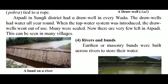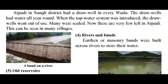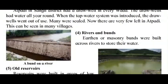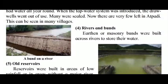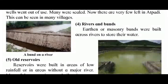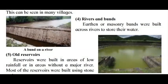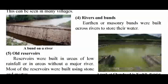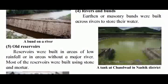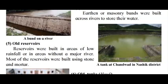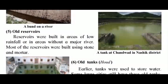Four: Rivers and bunds. Masonry bunds were built across rivers to store their water. Five: Old reservoirs. Reservoirs were built in areas of low rainfall or in areas without a major river. Most of the reservoirs were built using stone and mortar — for example, a tank at Chandavad in Nashik district and a tank in Aurangabad city.